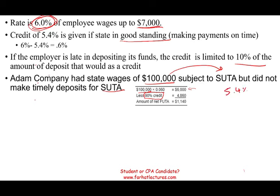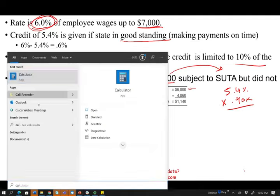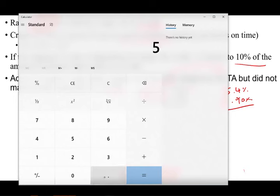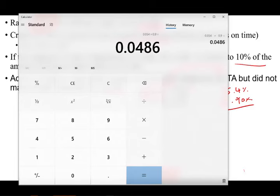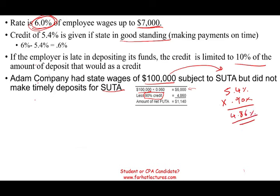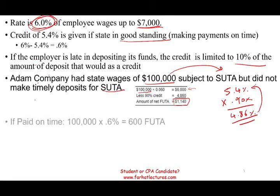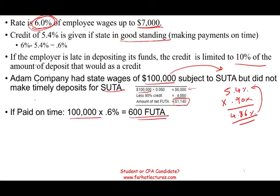The credit is normally 5.4%. But because Adam is not in good standing, only 90% of that credit applies: 5.4% × 0.9 = 4.86%. So the credit is $4,860, and Adam ends up paying $1,140 in FUTA. If Adam had made the payment on time, they would have only paid $600 — that is $100,000 times 0.6% (0.006).